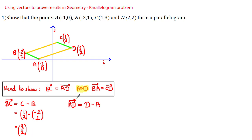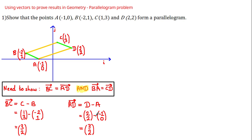Working out the vector AD: this is equal to D minus A, which is (2, 2) minus (-1, 0). That gives 2 minus (-1) = 3 and 2 minus 0 = 2, and therefore AD = (3, 2), confirming that vector BC equals vector AD.